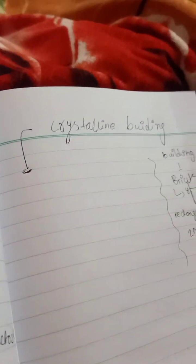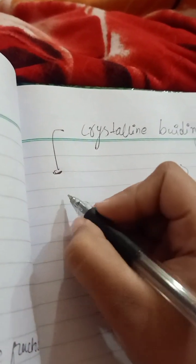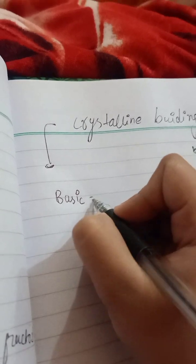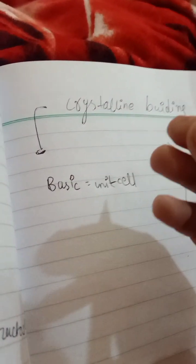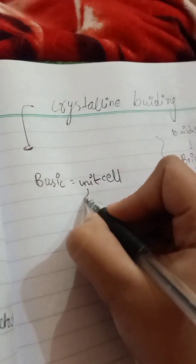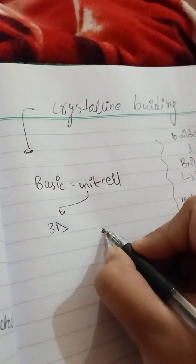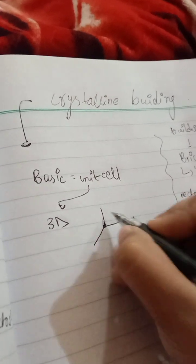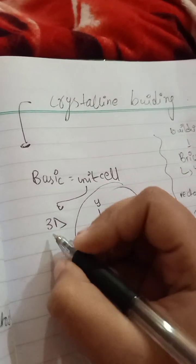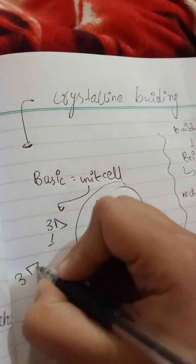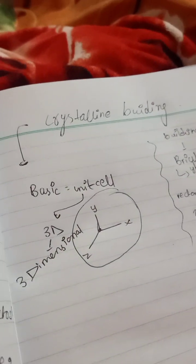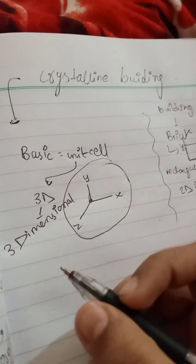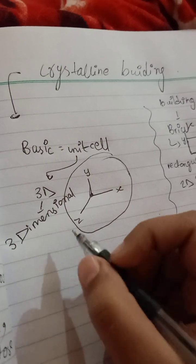Likewise, for crystalline building, the basic unit is the unit cell. The unit cell is basically the repeating unit through which the crystalline solid is built up. The unit cell is three-dimensional, having an x-axis, y-axis, and z-axis. So the unit cell is three-dimensional, making up a crystalline solid which is also three-dimensional.